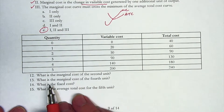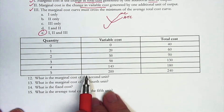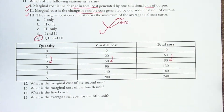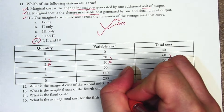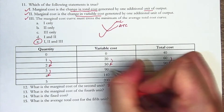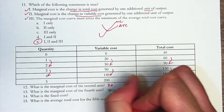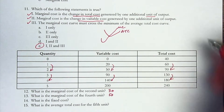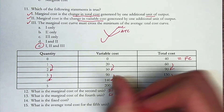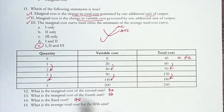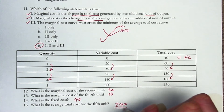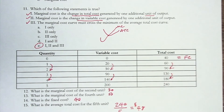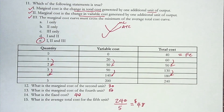Now for number 12, using the table with marginal cost, fixed cost, and average total cost. Marginal cost of the second unit: the change going to the second unit is 30 over 1, so $30. Marginal cost of the fourth unit: that's $50 — and it happens to be $50 there too, so that holds true. What's the fixed cost? At quantity zero, variable cost is zero and total cost is $40, so fixed cost must equal $40. And the average total cost for the fifth unit: total cost at 5 is $240 divided by quantity 5, which equals $48. Hopefully this helps you think about the relationships among costs. See you next time.